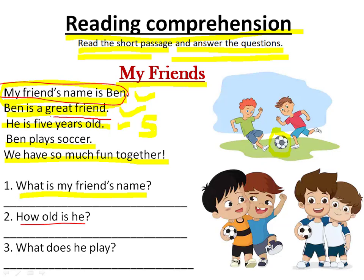Again, copy from the passage. How old is he? He is five years old. Now question number three: What does he play? From the passage you can write — Ben plays soccer. Wasn't this easy? You'll love this, children.